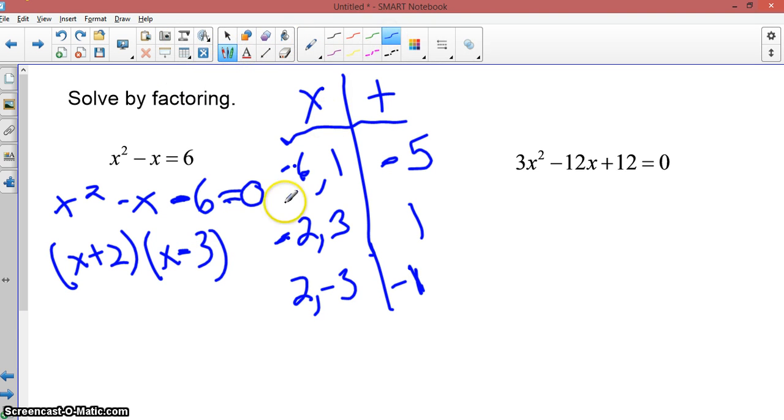And then that means that the solutions are x equals negative 2 because you set x plus 2 equal to 0. And x equals 3 because you set x minus 3 equal to 0. You set both factors equal to 0 separately. And then you get those two answers. Now, last but not least, I'll probably do ones that are kind of like this in a class. But how do you solve this one?